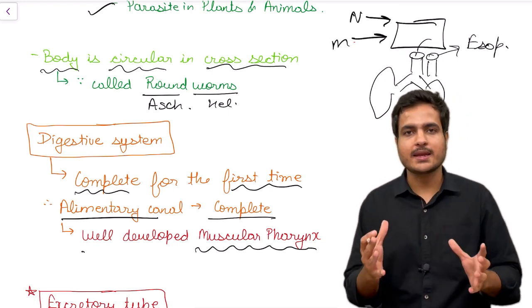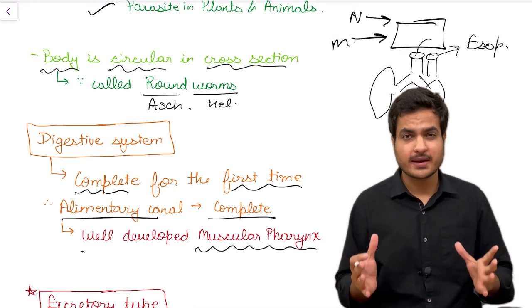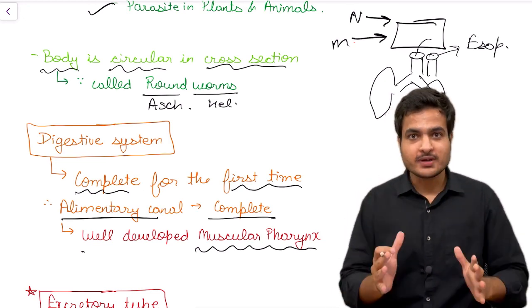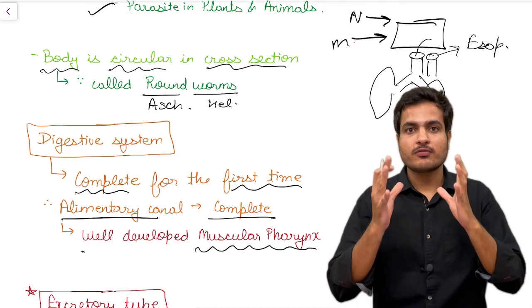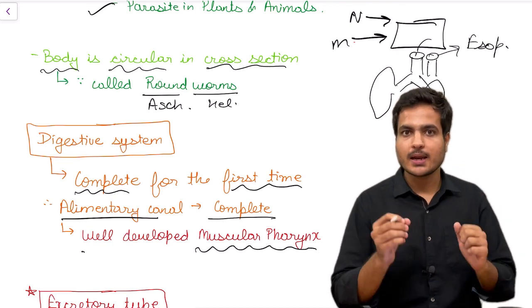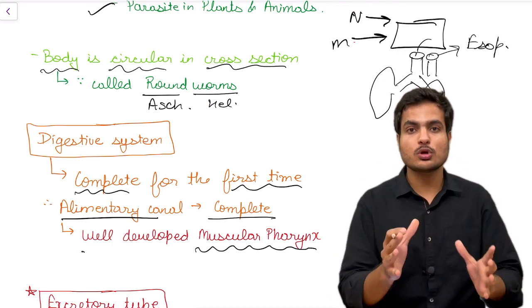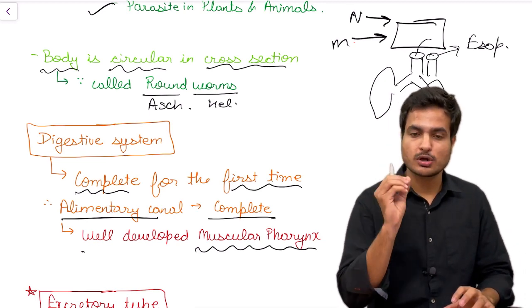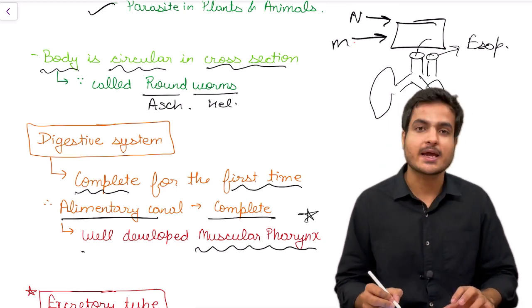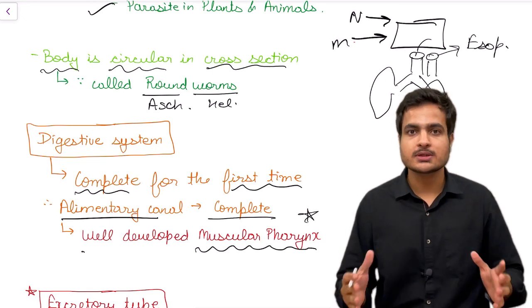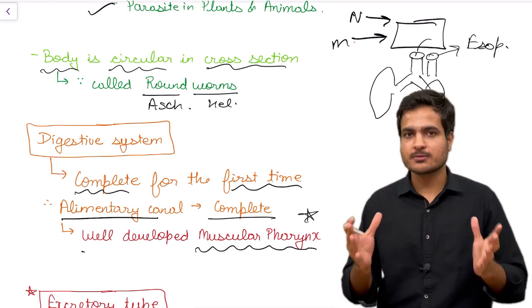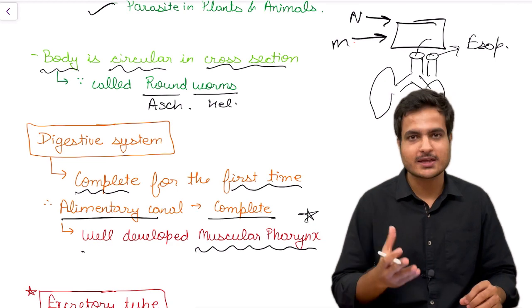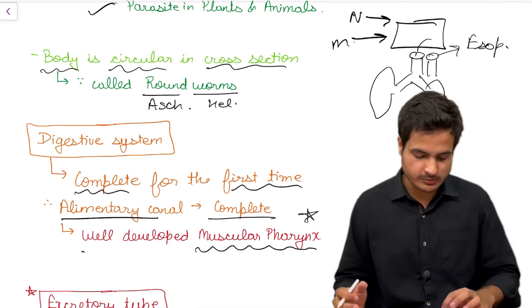This common chamber for air and food is called pharynx. So for the first time they have a fully developed alimentary canal with a well developed muscular pharynx. This has been asked multiple times in question papers, which phylum has a well developed muscular pharynx? So the answer would be roundworms.